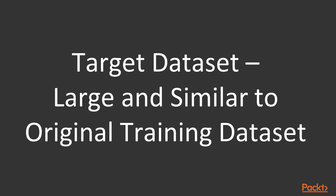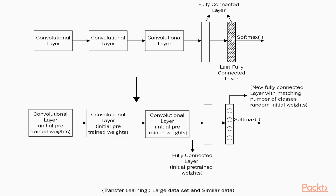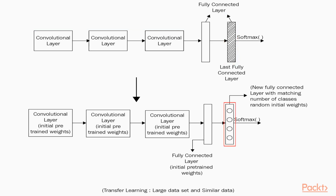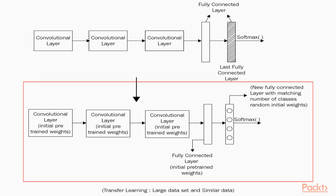Another case is where the target dataset is large and similar to the original training dataset. Here we do not have an overfitting concern, so we can retrain the entire network. We remove the last fully connected layer and replace it with one that matches the number of classes in the target dataset, randomly initializing its weights. The rest of the weights are initialized with pre-trained weights, and then we train the entire network.